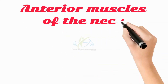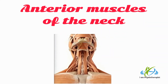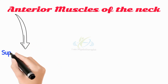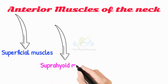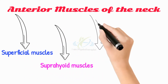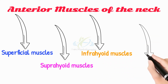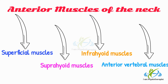The anterior muscles of the neck are further classified into superficial muscles, suprahyoid muscles, infrahyoid muscles, and anterior vertebral muscles.